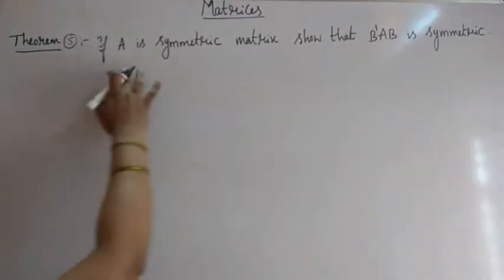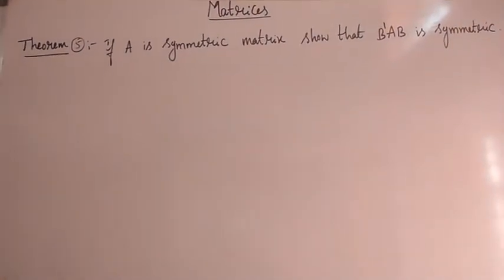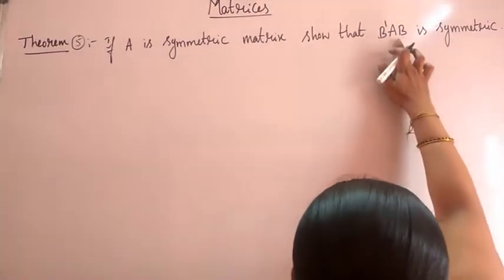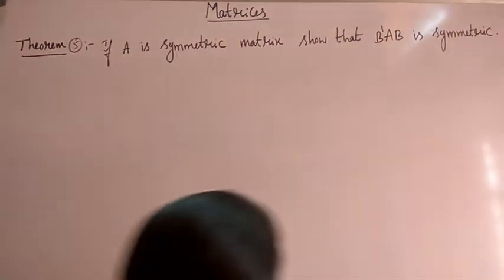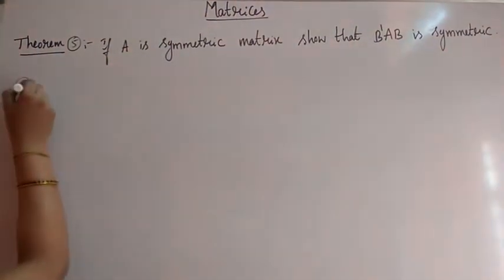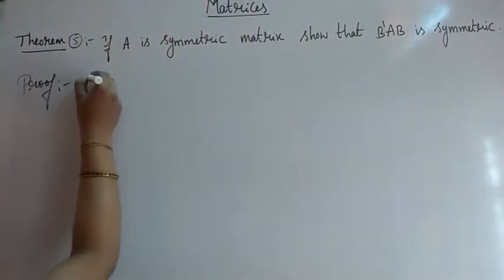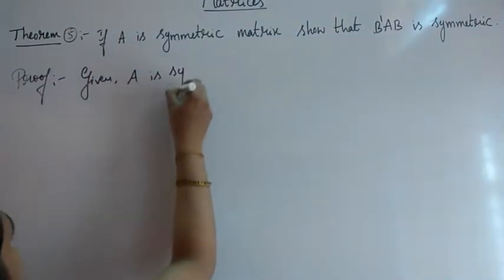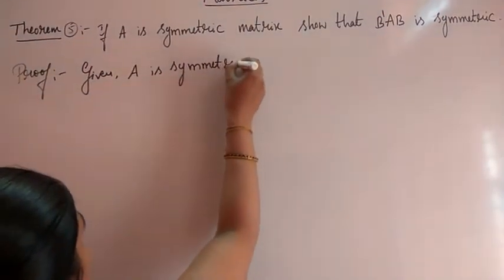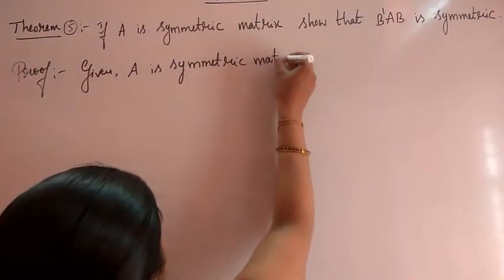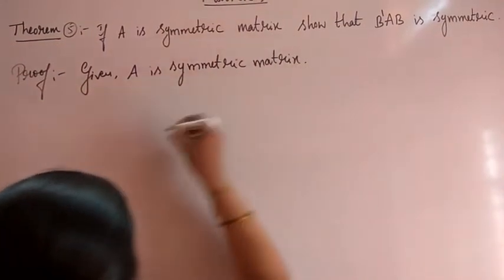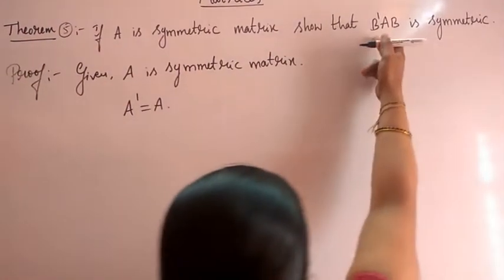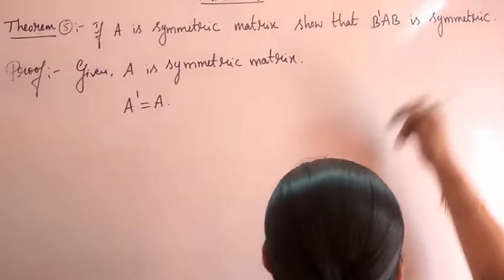Theorem 5: If A is a symmetric matrix, show that B'AB is symmetric. Given A is a symmetric matrix. Since A is symmetric, by definition A' equals A. We have to prove that B'AB is also symmetric.